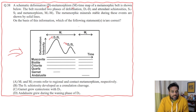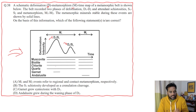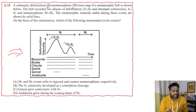The metamorphic minerals that were stable during these events are shown by the lines on the graph. If you see muscovite, it was stable throughout. Biotite was stable during M1 and M2. So this represents the stability of the minerals during these events.